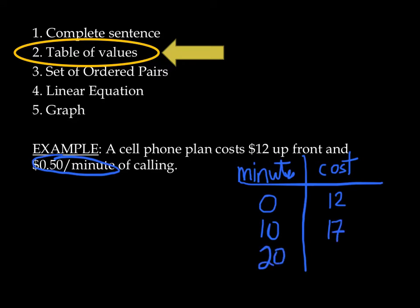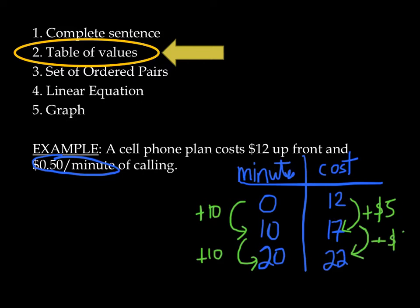And 20 minutes, well, you can calculate this out yourself. That's going to cost you $22. Now, we know that this is linear because the rate of change stays the same. It stays constant. Every time I add 10 minutes, I'm adding $5 to my cost. Another 10 minutes of time, another $5 of cost. So my rate of change in this table is $5 for 10 minutes.